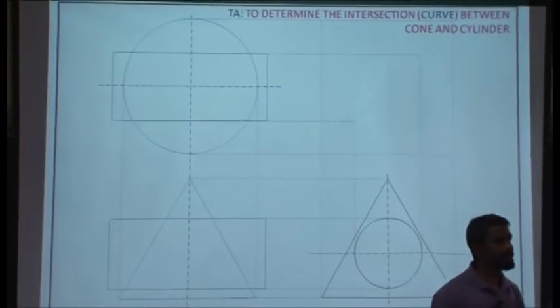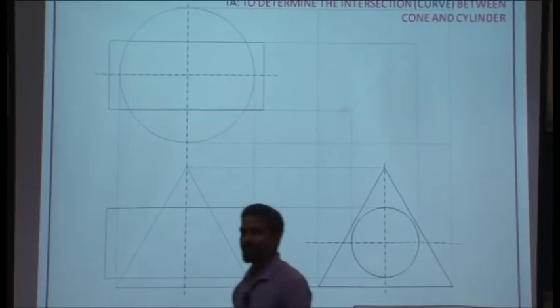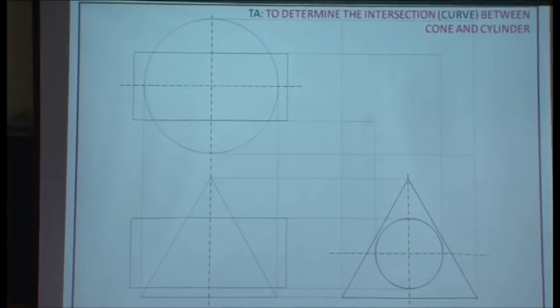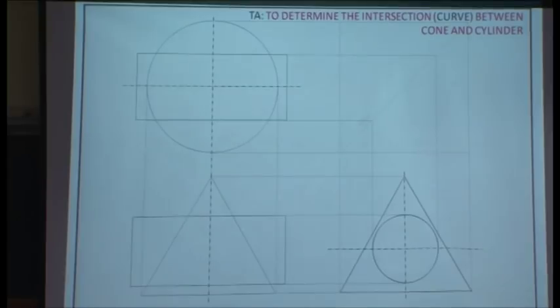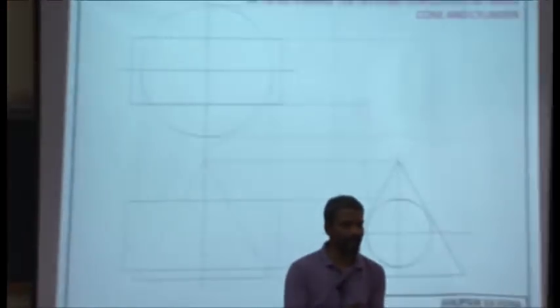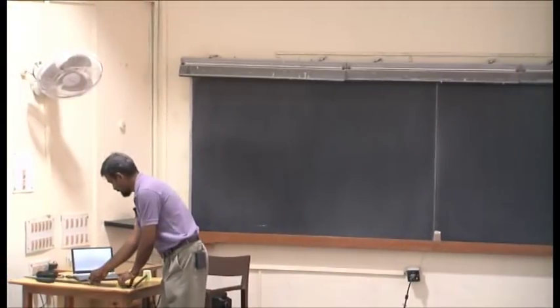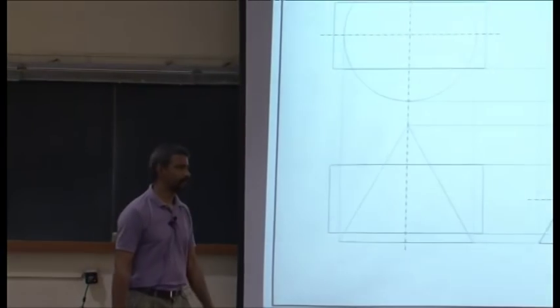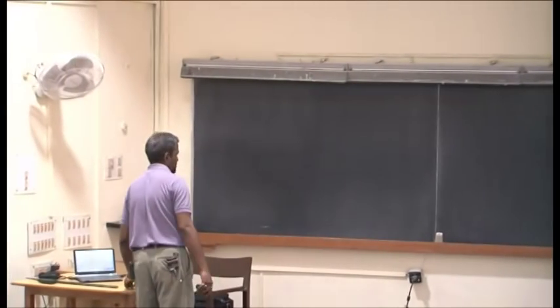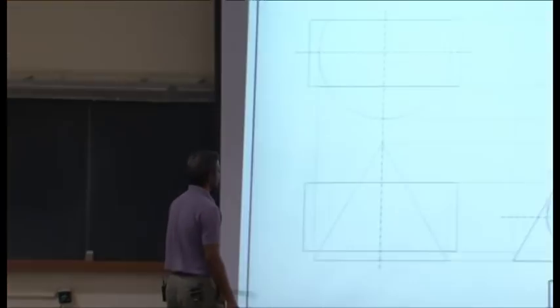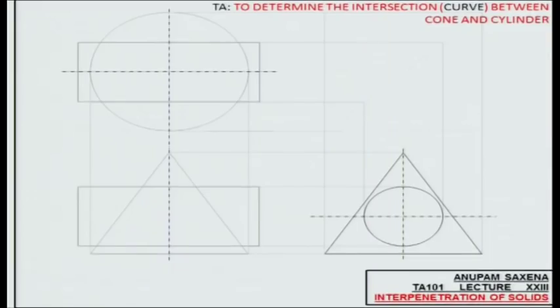An extension of this is what you will possibly be doing in TA 201 when working with sheet metal. A cone is a developable surface — you can cut it out and spread it on a plane and it will look like a big sector. Likewise, a cylinder cut out on a plane looks like a rectangle. Given the positions of the cone and the cylinder depicted by three views — whether first angle or third angle — figure out the intersection curves, or in a single word, the interpenetration between the two solids.